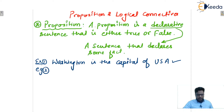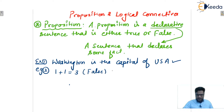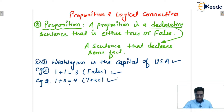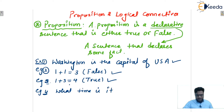Next example: '1 + 1 = 3.' This statement is false, and because it is false, we can declare that this statement is still a proposition. Next: '1 + 3 = 4.' This statement is true, so we call it a proposition. Now consider: 'What time is it?' This is not a proposition because it is not a declarative sentence — it does not declare any fact.